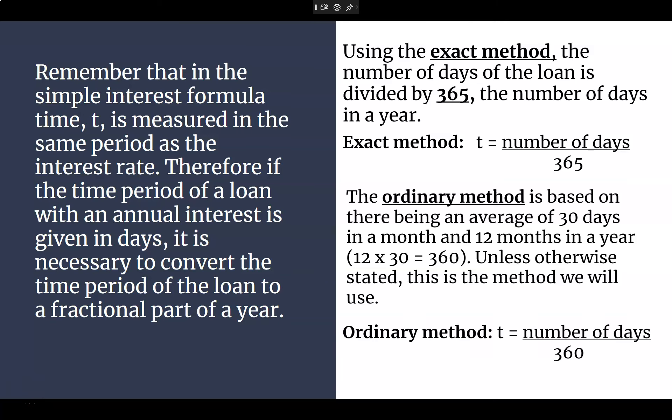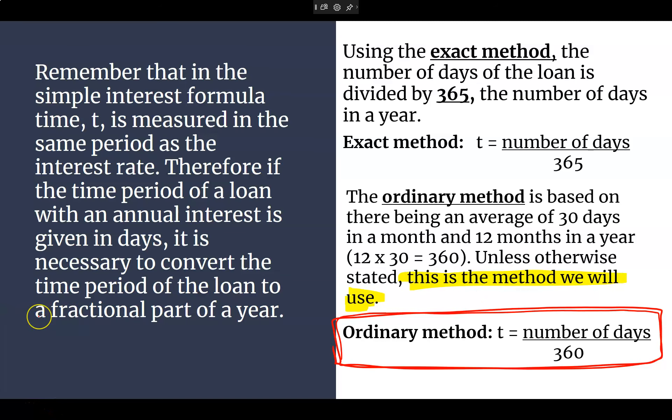Because we won't be told what months we're using. We won't always know the exact number of days that it is being referenced to. So we are going to be using the ordinary method unless told otherwise. This is the one that we are going to use. So when we talk about daily, we will use 360. This is the method we will use. Any questions on why we're going to use 360 for days?